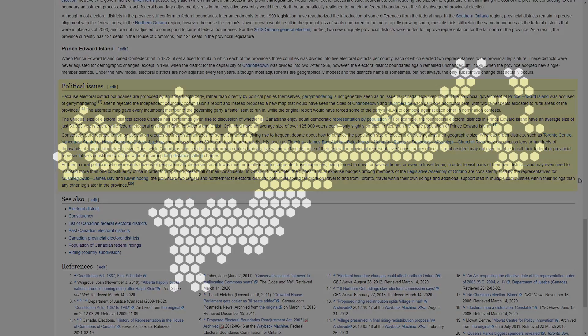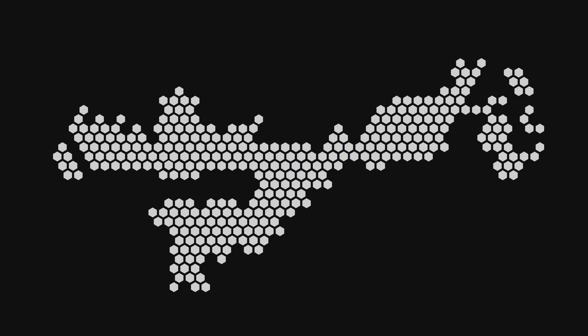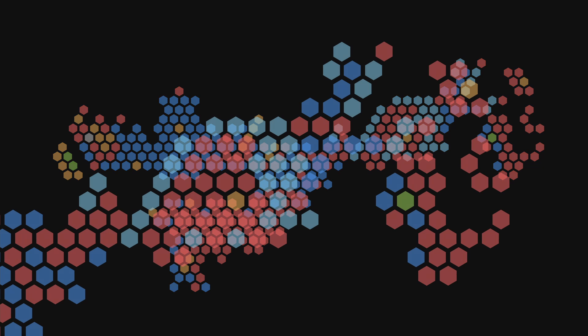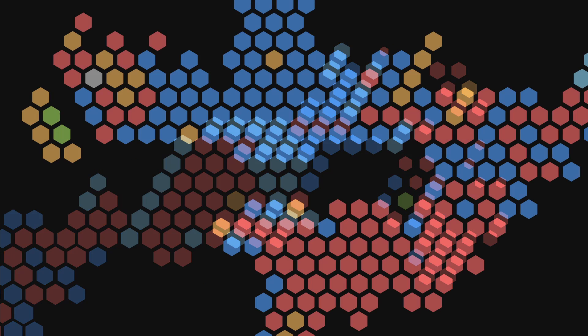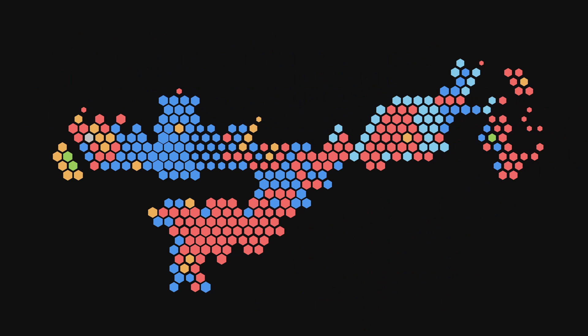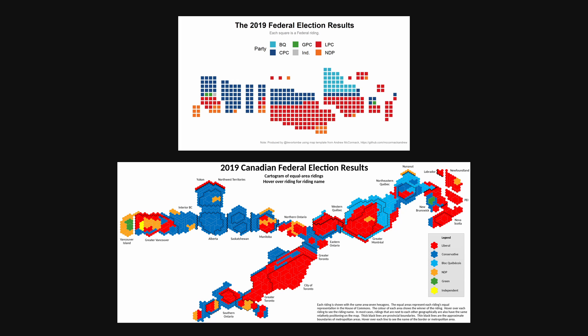If we instead create a map where all the ridings are the same visual size, all of a sudden the picture becomes much clearer. Of course we lose some information about geographic distribution, but we gain the ability to see all of the ridings at the same time. If we wanted to, we could scale these to make the areas proportional to the actual populations of those ridings. Now we have a map of all the electoral districts accurately representing the population and which party was elected. This has already been done — there are maps like this one and this one that have already been made.